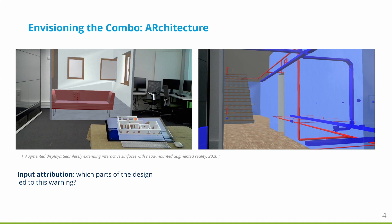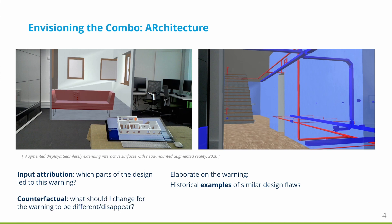If the architect is not convinced by this suggestion, an explanation by example could show other buildings or systems that have historically had similar design flaws. Likewise, the system could show potential changes that would lead to a different conclusion, which is what counterfactual explanations support. This information could be shown in either the surface space or directly in augmented reality.